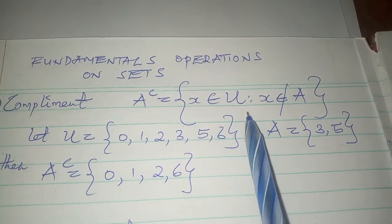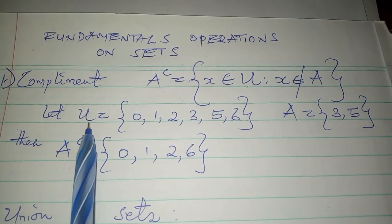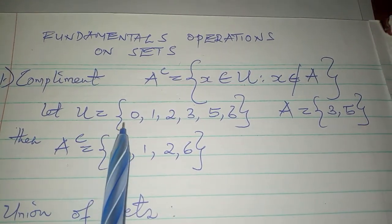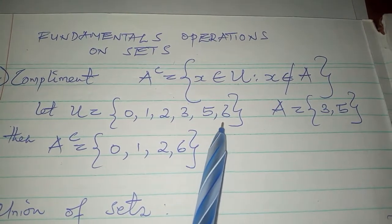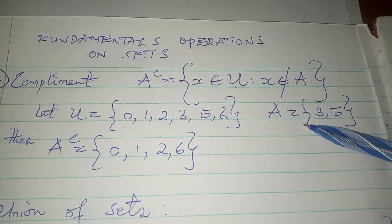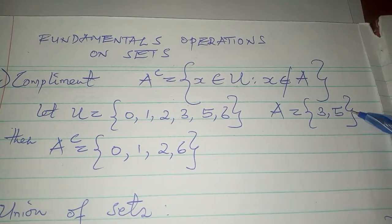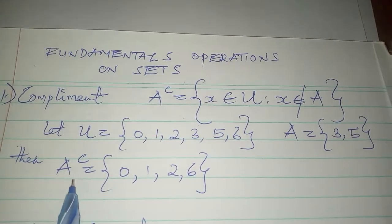For example, we can say let U be the universal set containing elements 0, 1, 2, 3, 5, 6, and A be the set containing 3, 5.